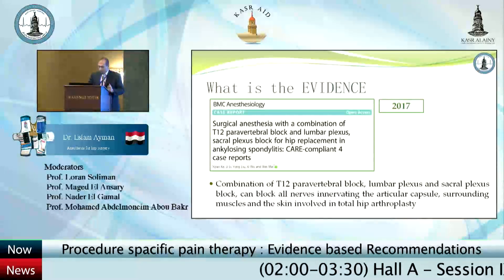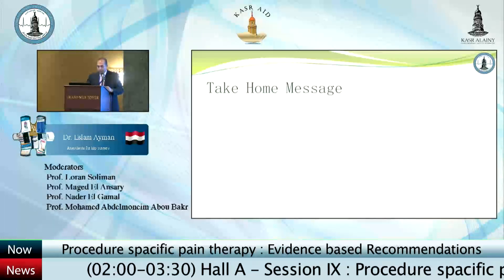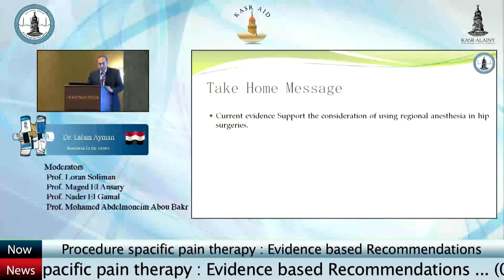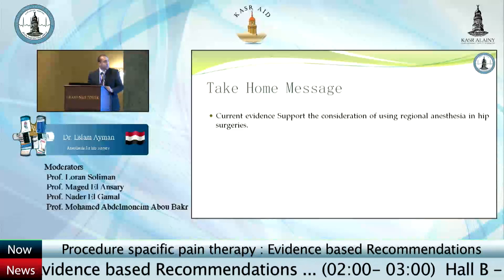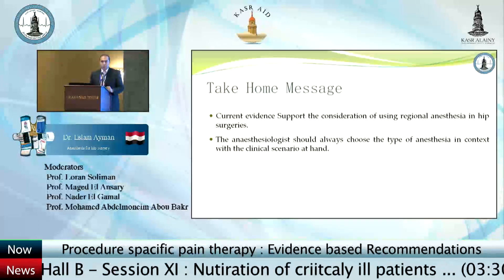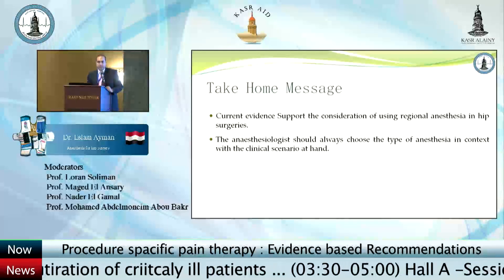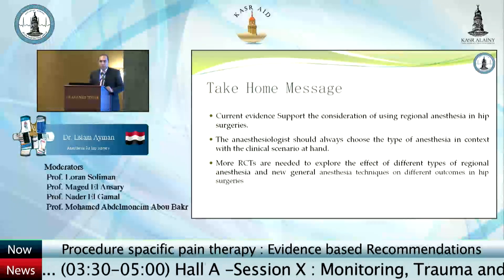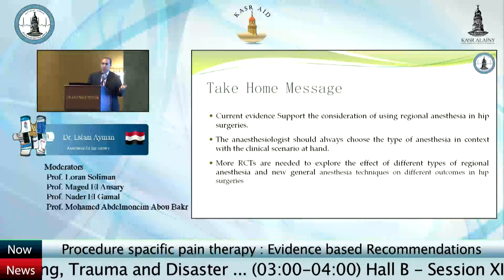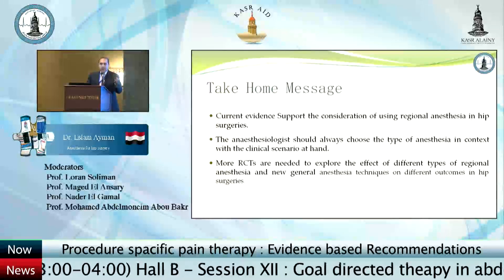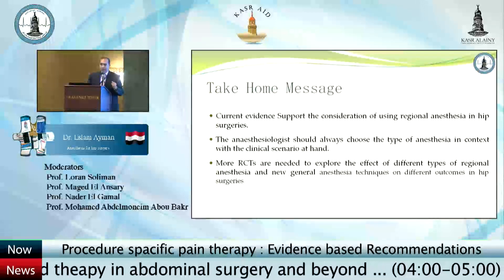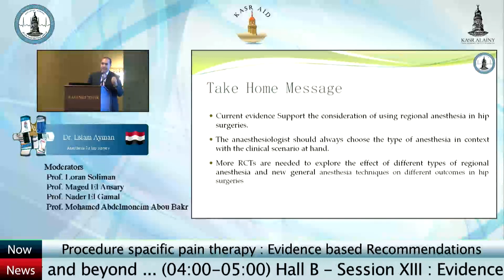The take-home message: current evidence supports consideration of using regional anesthesia in hip surgery. However, the anesthesiologist should choose the type of anesthesia in the context of the clinical scenario. We need more randomized controlled studies to explore the effect of different anesthetic techniques — regional, neuroaxial, peripheral blocks, or GA — on final patient outcomes such as mobility and satisfaction. We currently have a very low number of quality studies that address these issues.